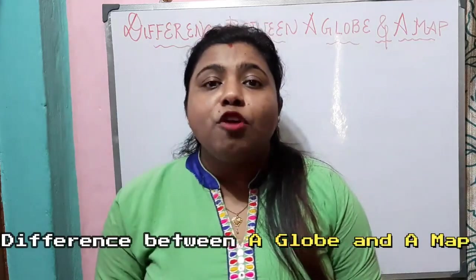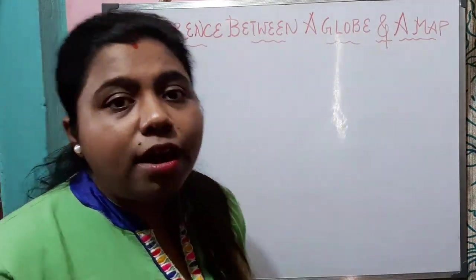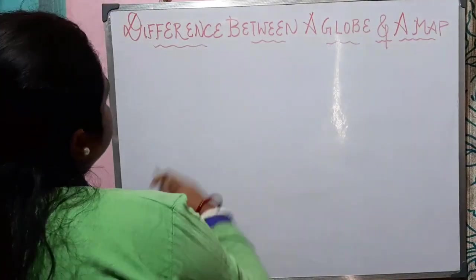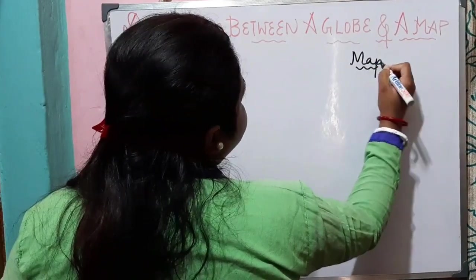Hello everyone, welcome back to my geography classes. Today we will discuss a very important topic: how are maps and globes different from each other. We will know about the difference between a globe and a map for Class 6, Chapter 4 - Maps. In the last video we covered the definition of a map, what is atlas, who is a cartographer, and the advantages and disadvantages of maps. In this video we will know the major differences between a globe and a map.